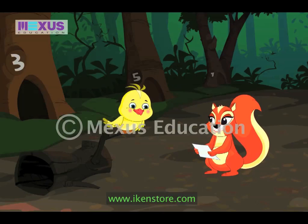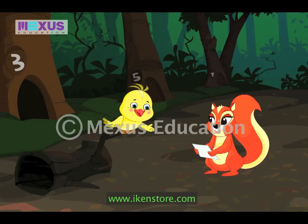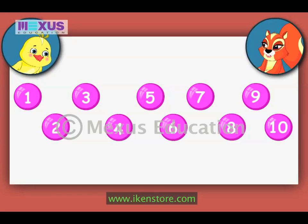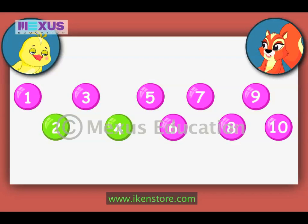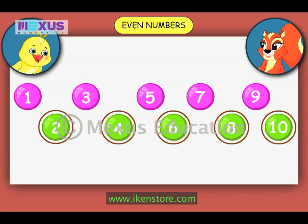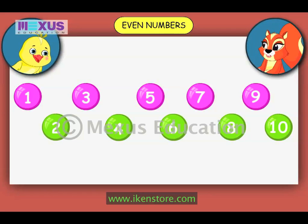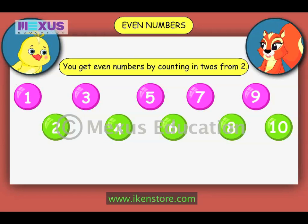But what about the numbers 2, 4, 6, and 8? I was just coming to that. Let us go back to the bubbles. Let us count in twos starting from 2. Can you make the number pattern, Amber? If I count in twos starting from 2, the pattern is 2, 4, 6, 8, 10. The numbers in the green bubbles are called even numbers.